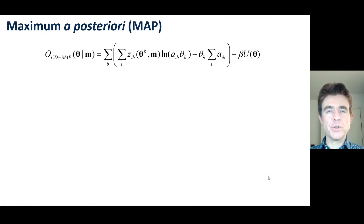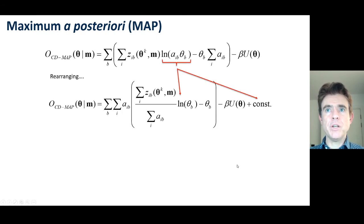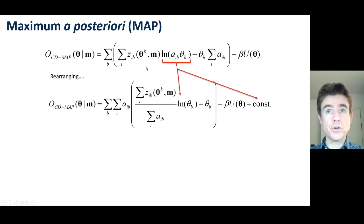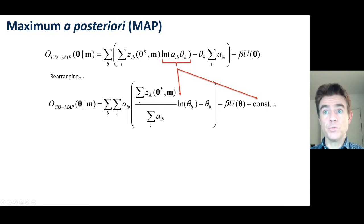We look at the logarithm term and recognise that the product log(A_{IB} theta_B) can be split to log(A_{IB}) plus log(theta_B). The log(A_{IB}) is a constant multiplied by the complete data, which is also constant since theta_k and M are fixed. So all of that comes out as a constant, splitting the logarithm as shown.